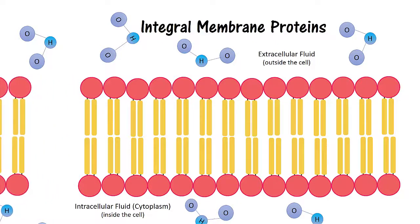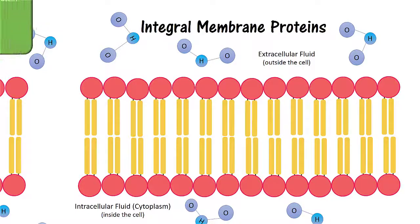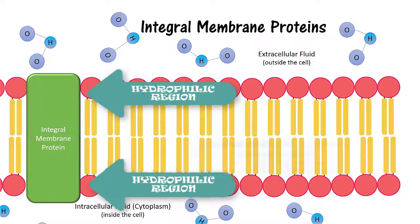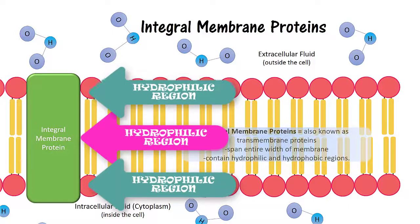Integral membrane proteins are transmembrane proteins which span the extracellular and intracellular sides of the plasma membrane. They are going to have both hydrophilic and hydrophobic regions.